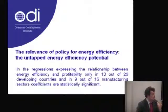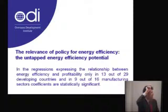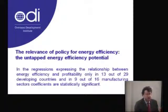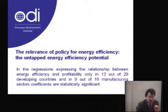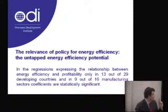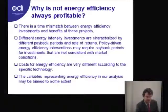We have three good messages: we are in the downward portion of the Environmental Kuznets Curve; energy intensity is decreasing; energy intensity promotes total factor productivity; and lower energy intensity promotes profitability. But do we need policy? The answer is yes. The first proof is that in the regression expressing the relationship between energy efficiency and profitability, only in 13 out of 29 developing countries and 9 out of 16 manufacturing sectors are coefficients statistically significant — as Simon and Ludovico were discussing: why don't we find that energy efficiency is always profitable?